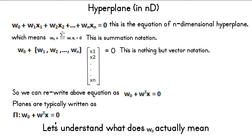Here we are applying the transpose operation on vector w to convert the column vector to a row vector. This is a more concise way to write the equation. Planes are typically written as π. The equation of a plane for any dimensional space would be π: w0 + w-transpose · x = 0. If w is n×1 and x is n×1, then this is the equation of a plane for n-dimensional space.